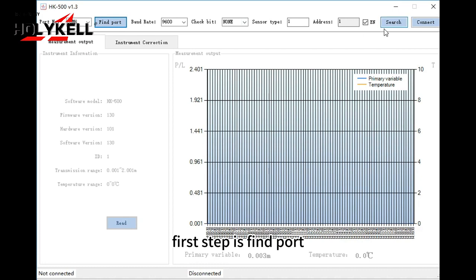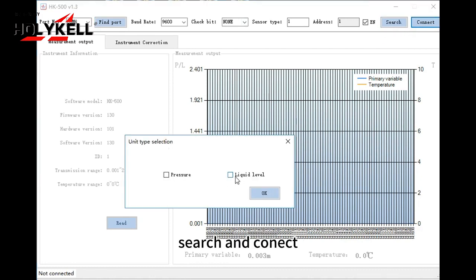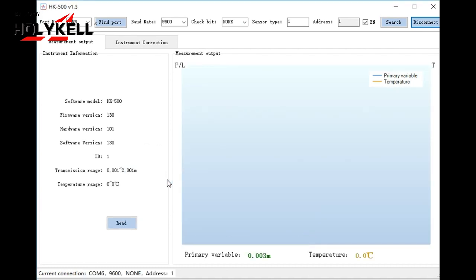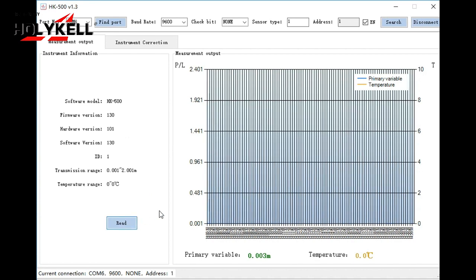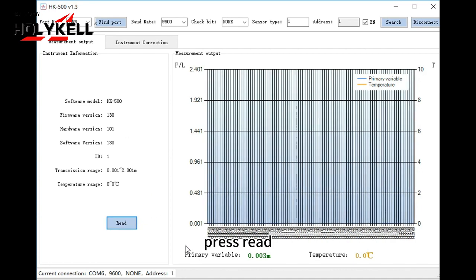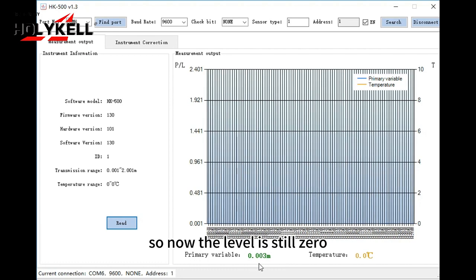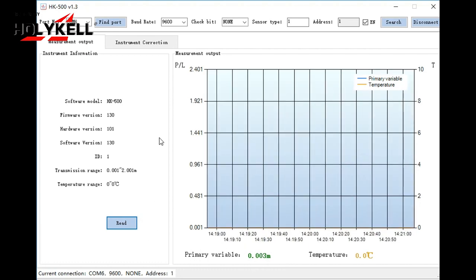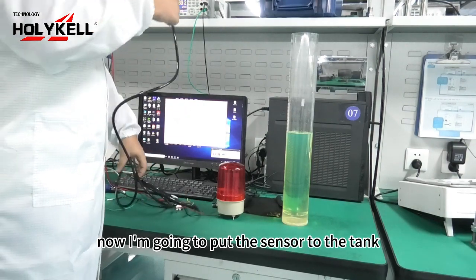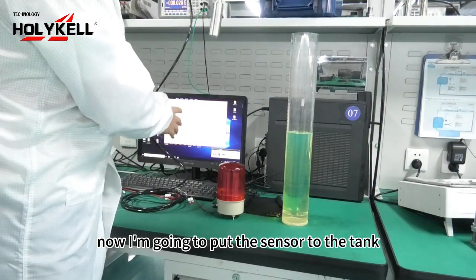First step is find the port, search, and connect. Because we are testing oil, select diesel. The sensor is still outside, so now the level is still 0. Now we are going to put in our sensor.